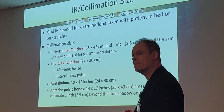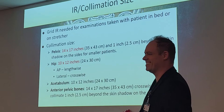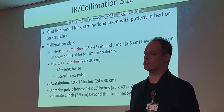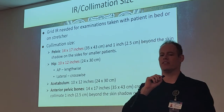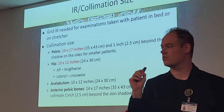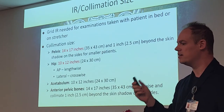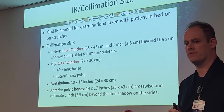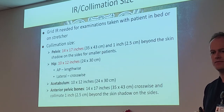All of these should either be done in the bucky or with a grid because it's a thick area of penetration. When doing portables, abdomen should be required for grid use because of how thick that area is — chest is optional. Now, an important concept: do grids reduce patient exposure? Are they used to help lower dose and protect the patient?